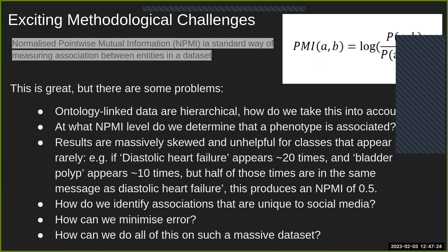We also have the problem of where to draw the threshold: at what point do we say something is interestingly associated, and does this cutoff differ based on the disease? There are also inherent problems with the NPMI measure itself — low overall occurrence of particular items can produce highly skewed values that make things look highly associated when it's really just a statistical artifact. Then there are the challenges of comparing our phenotypes to existing resources and minimizing error on such a massive dataset.